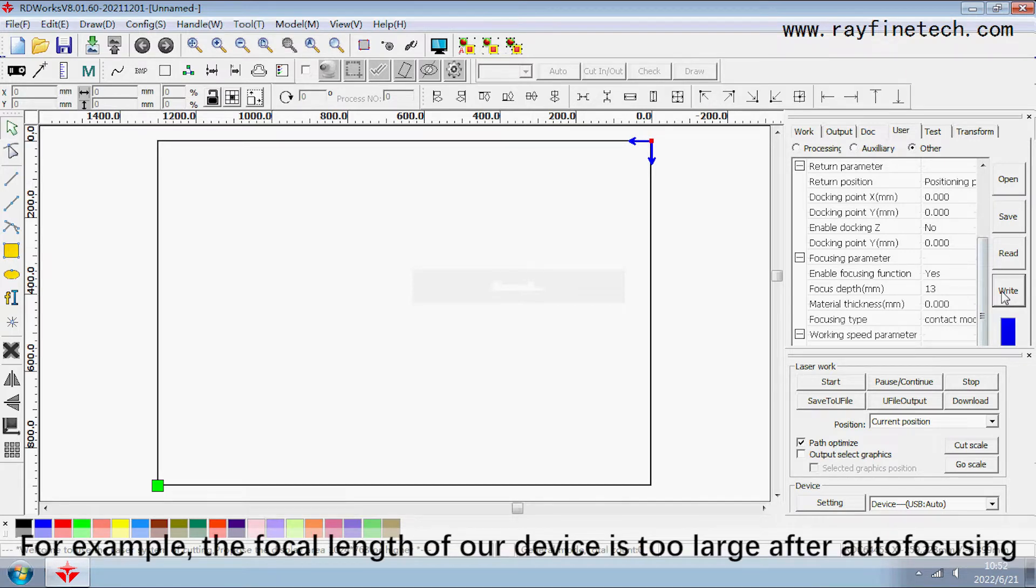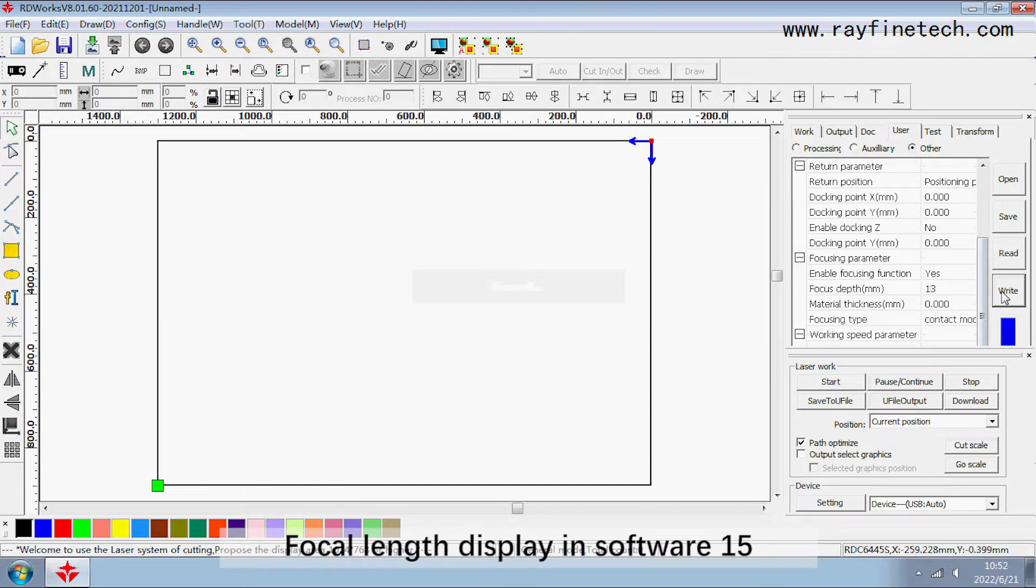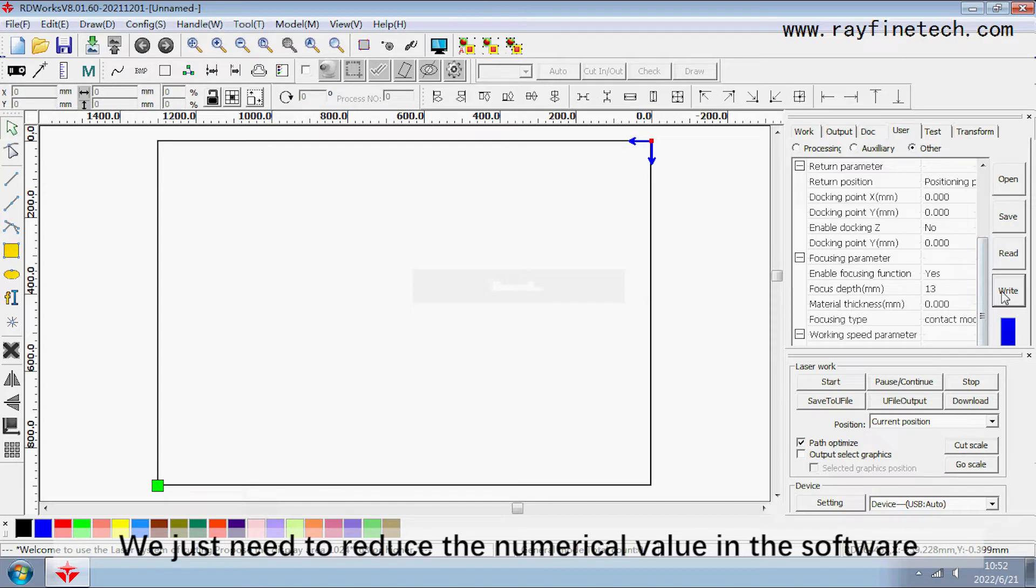For example, the focal length of our device is too large after defocusing. Focal length display in software is 15. We just need to reduce the numerical value in the software.